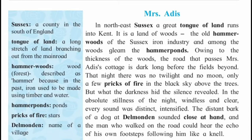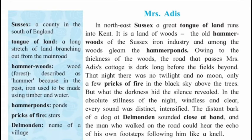Owing to the thickness of the woods, the road that passes Mrs. Addis's cottage is dark long before the fields beyond. That night, there was no twilight and no moon, only a few pricks of fire in the black sky above the trees. The writer describes Mrs. Addis's cottage — it was night time with no twilight and no moon. Twilight means the time between evening and night. There were only pricks of fire, meaning some stars shining in the sky.